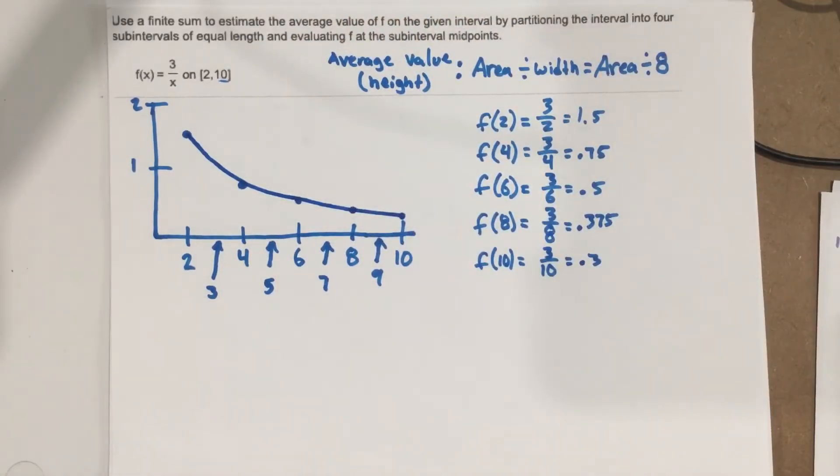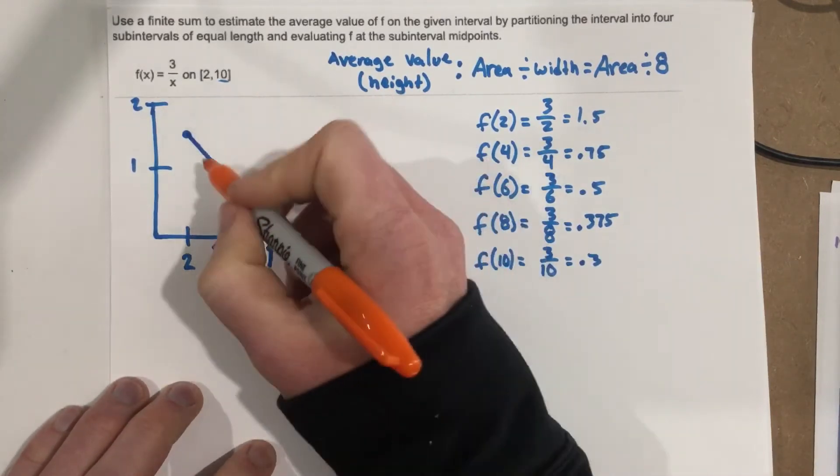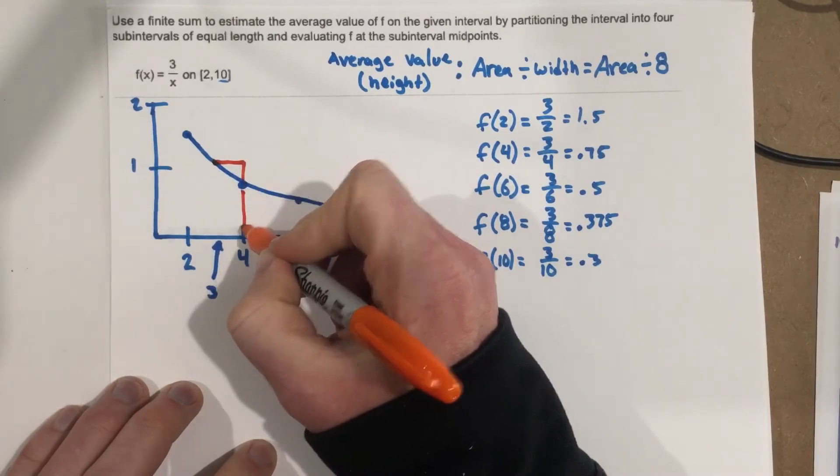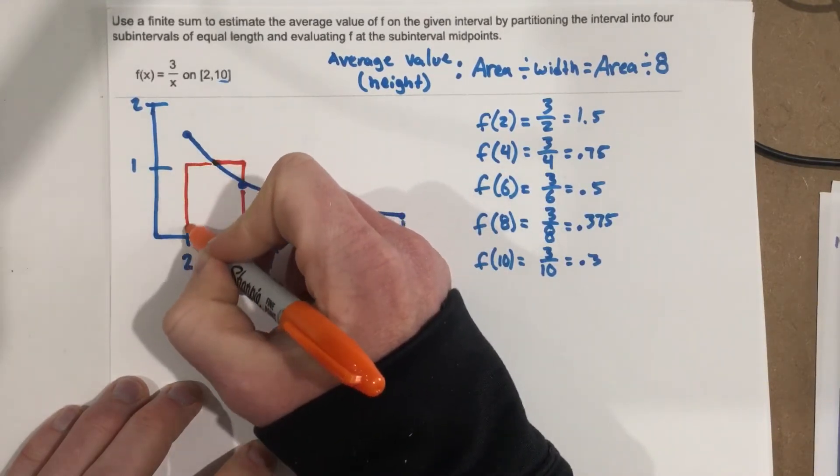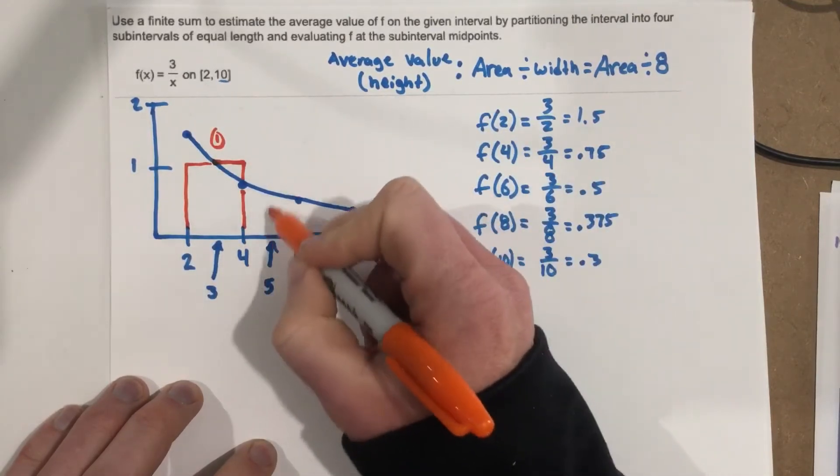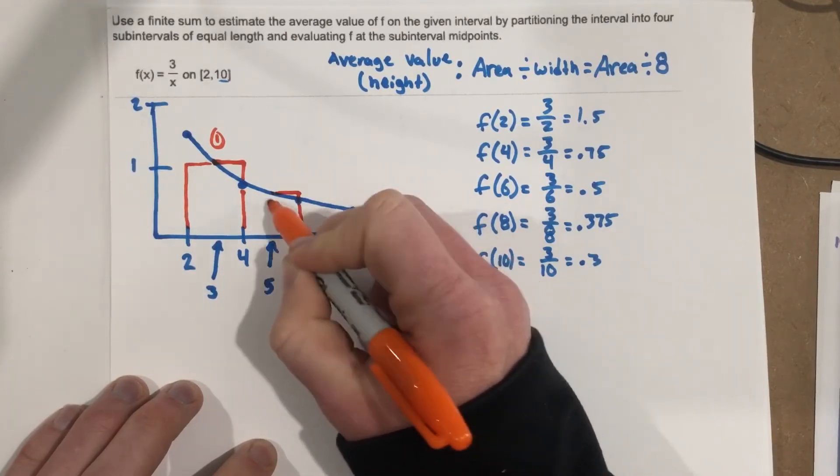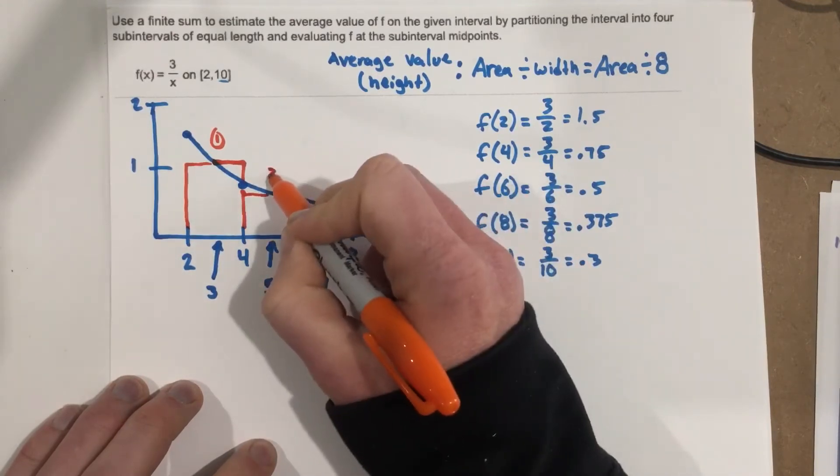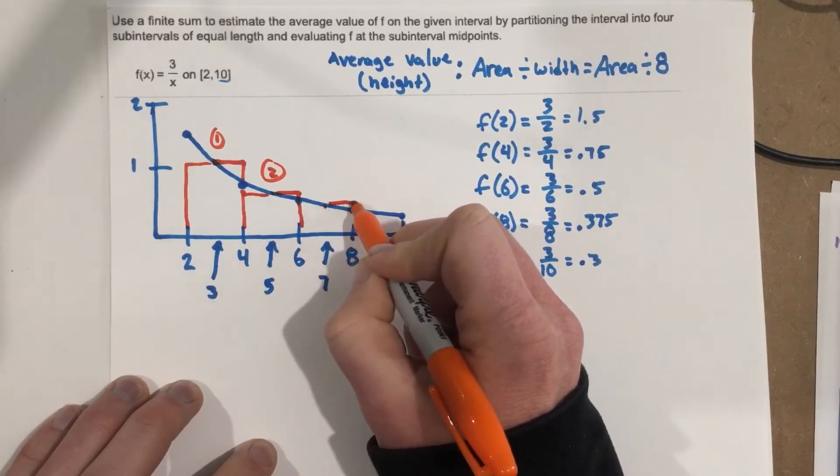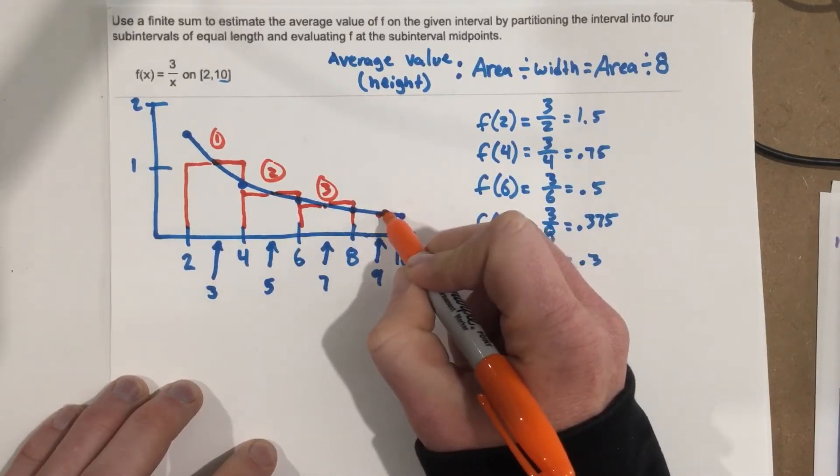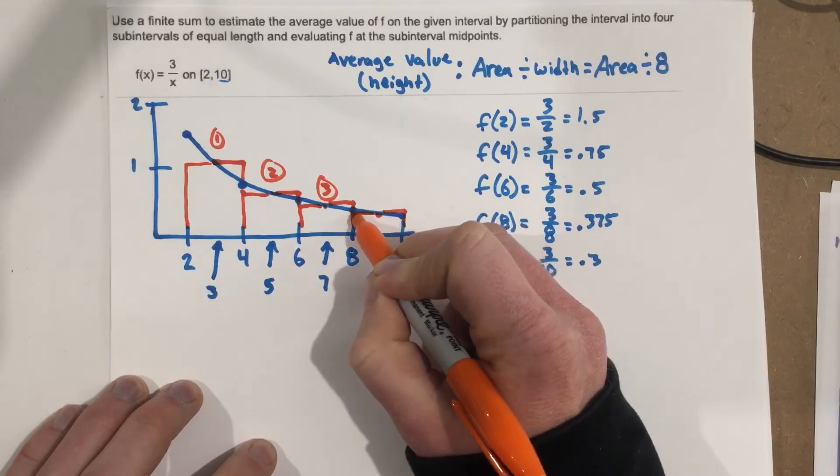Now, we want to go ahead and use the midpoint formula on this problem. So we want to go to the midpoint and draw some rectangles so we can find some areas. Midpoint here, draw the rectangle, that's going to be rectangle 1. Midpoint, draw the rectangle, this is rectangle 2. Midpoint, draw the rectangle, rectangle 3. And again, midpoint, draw the rectangle, rectangle 4.